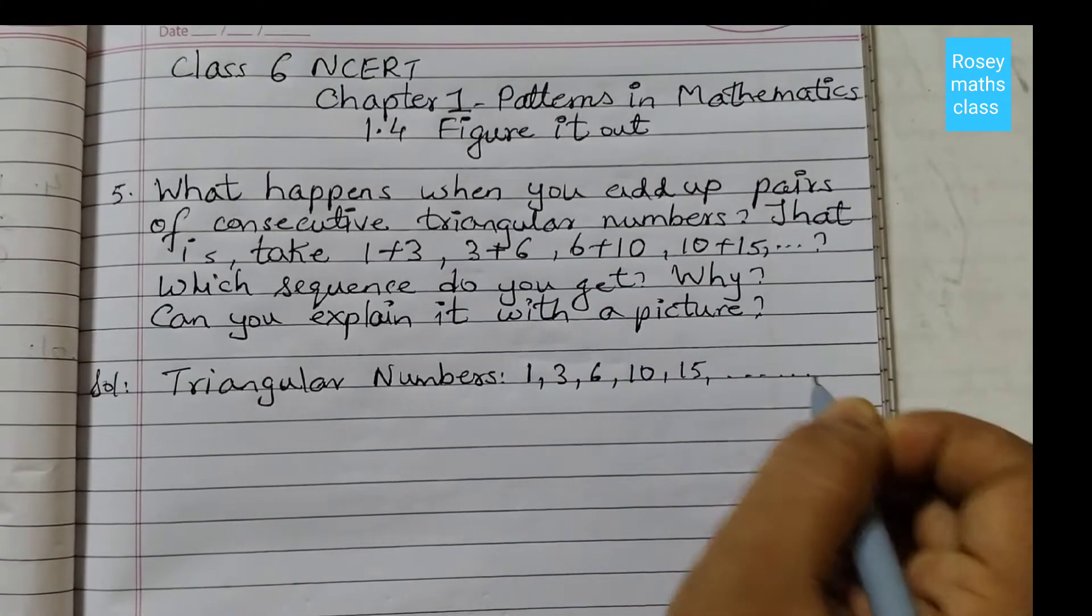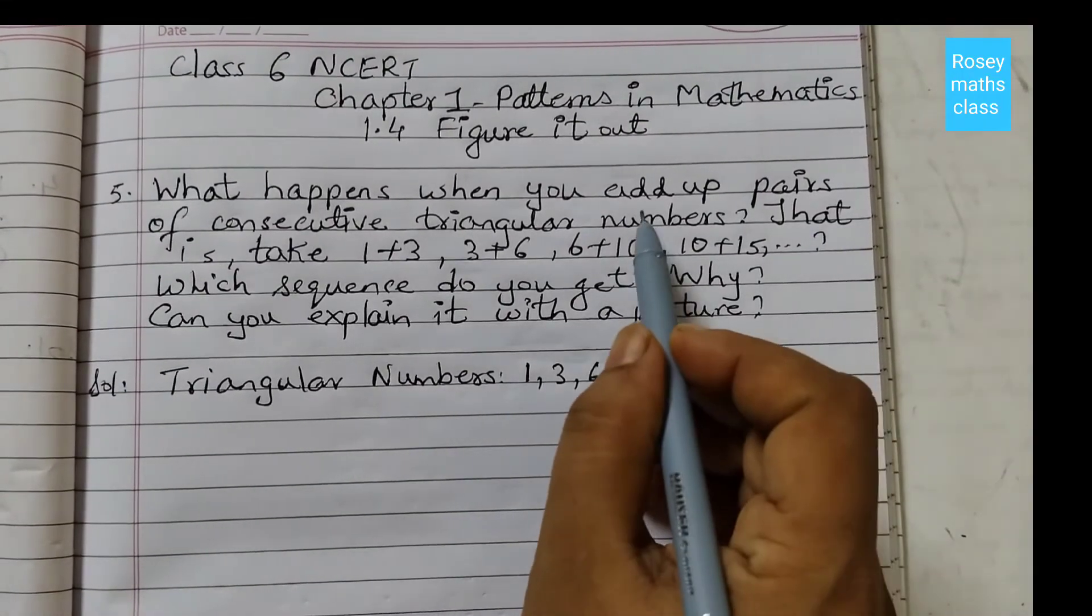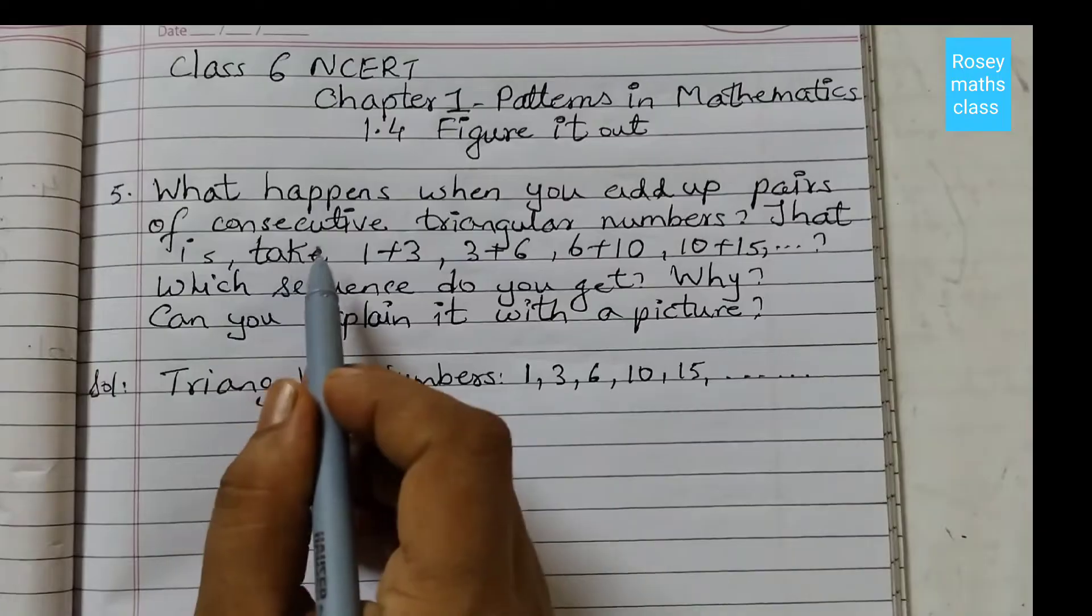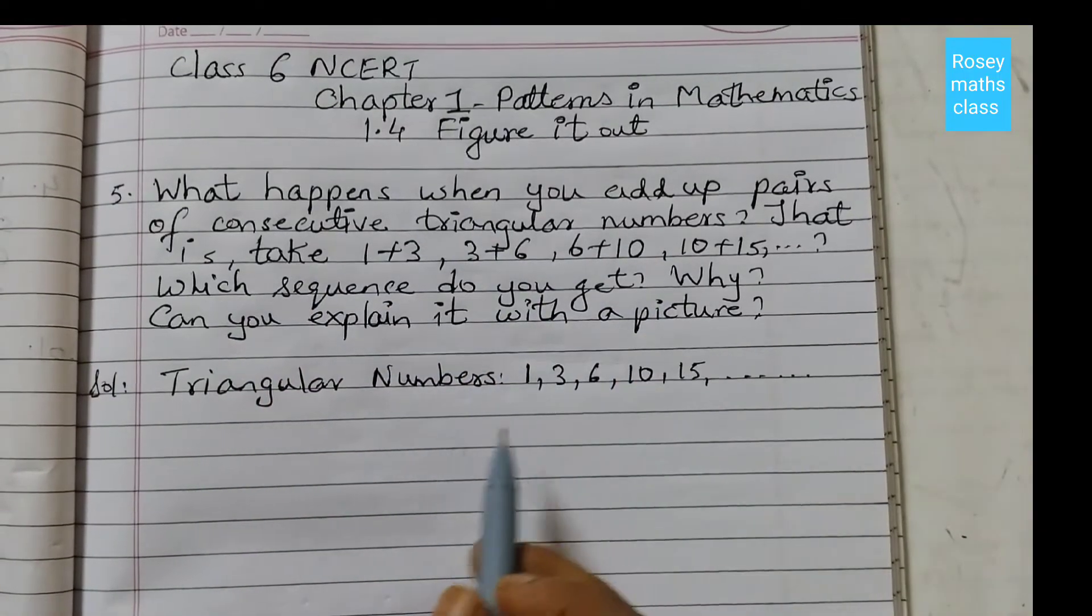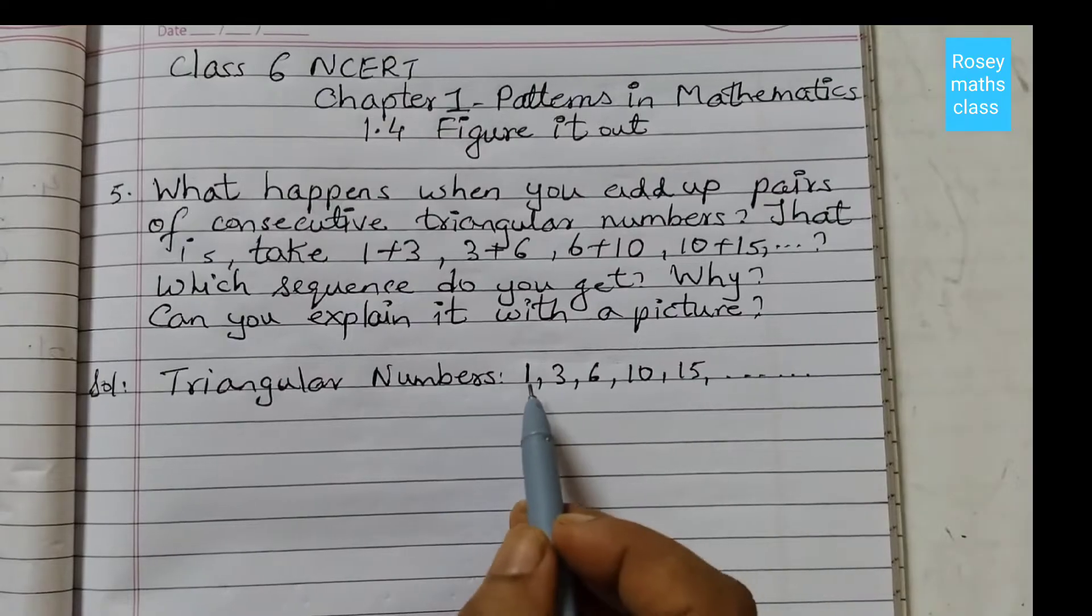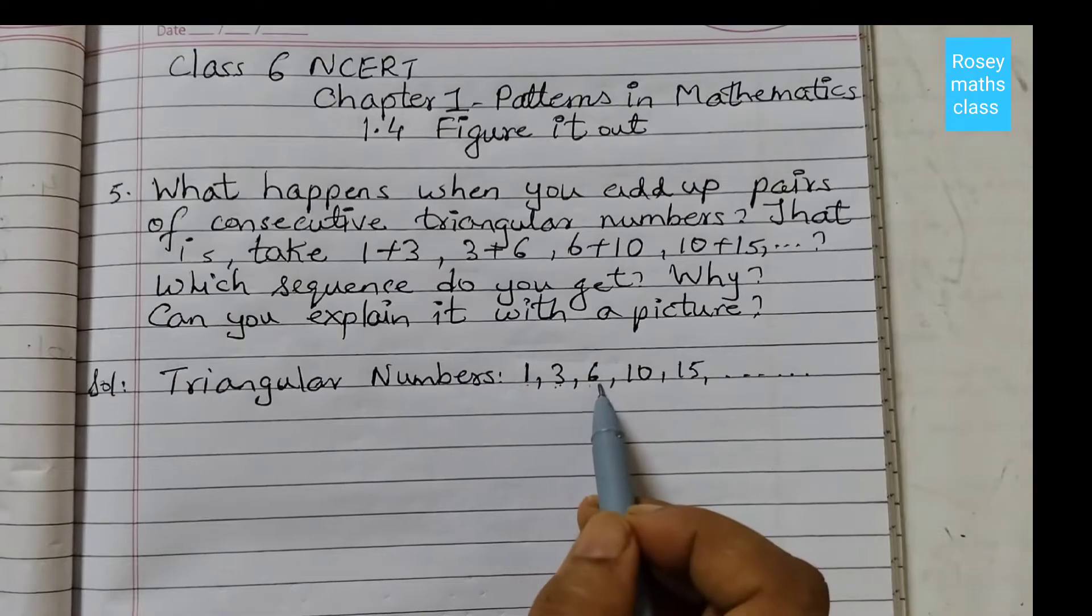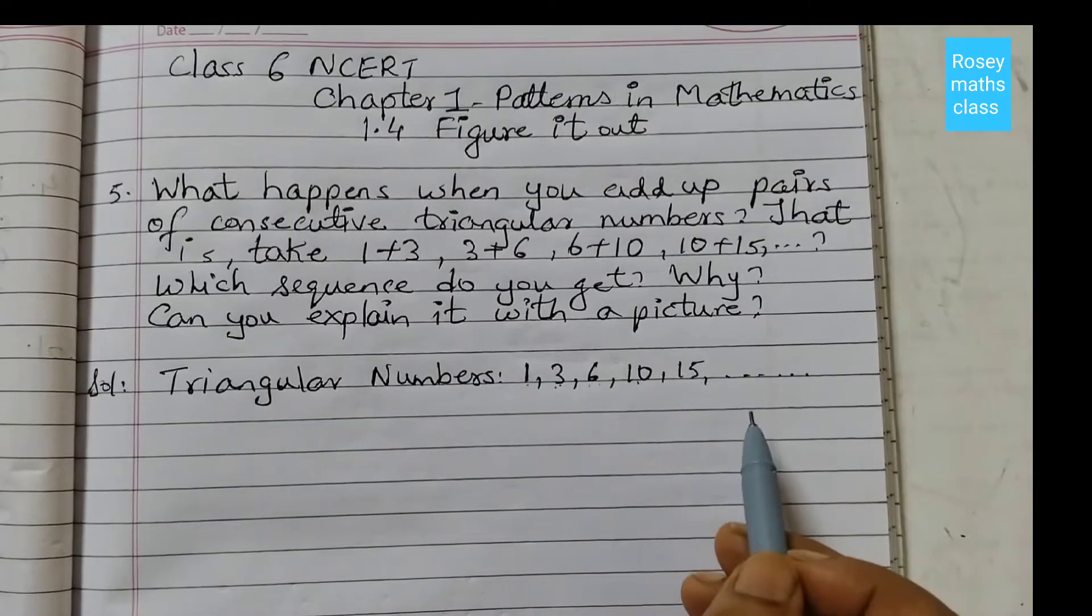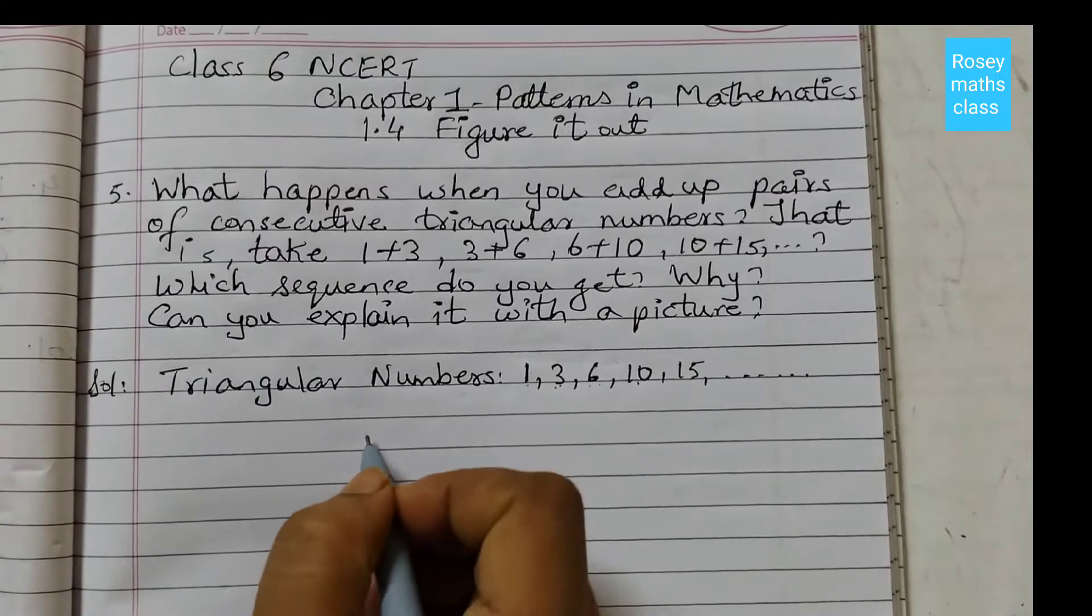and so on. We have already learned this before. These are triangular numbers. Now add up pairs of consecutive triangular numbers. Consecutive numbers means the numbers which follow each other, like next to each other: 1+3, 3+6, 6+10. So these are consecutive numbers. What happens when we add these numbers? Let's check.